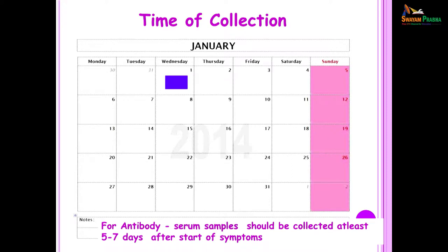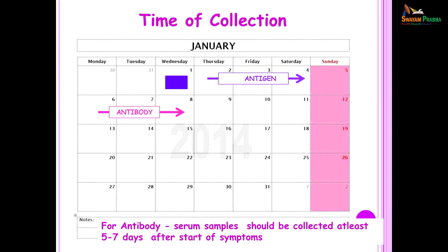This brings me to a very important aspect: the time of collection of sample. Whenever you are going to be performing a serological test, suppose your patient has disease on day 1. For antigen, you would collect the sample within the first 3 to 4 days — that is the time when antigen is going to be at its highest level. When it comes to antibody, it takes time for the body to develop antibodies, and these usually develop from the 5th to the 7th day of the illness. If you do not collect the sample at the right time, you will end up missing the diagnosis.